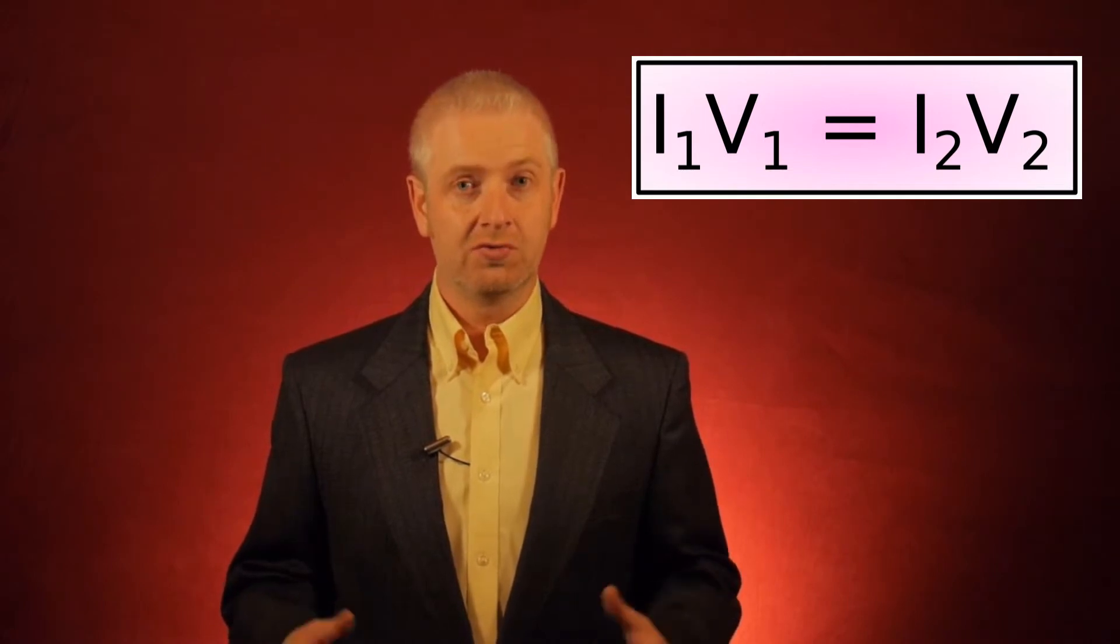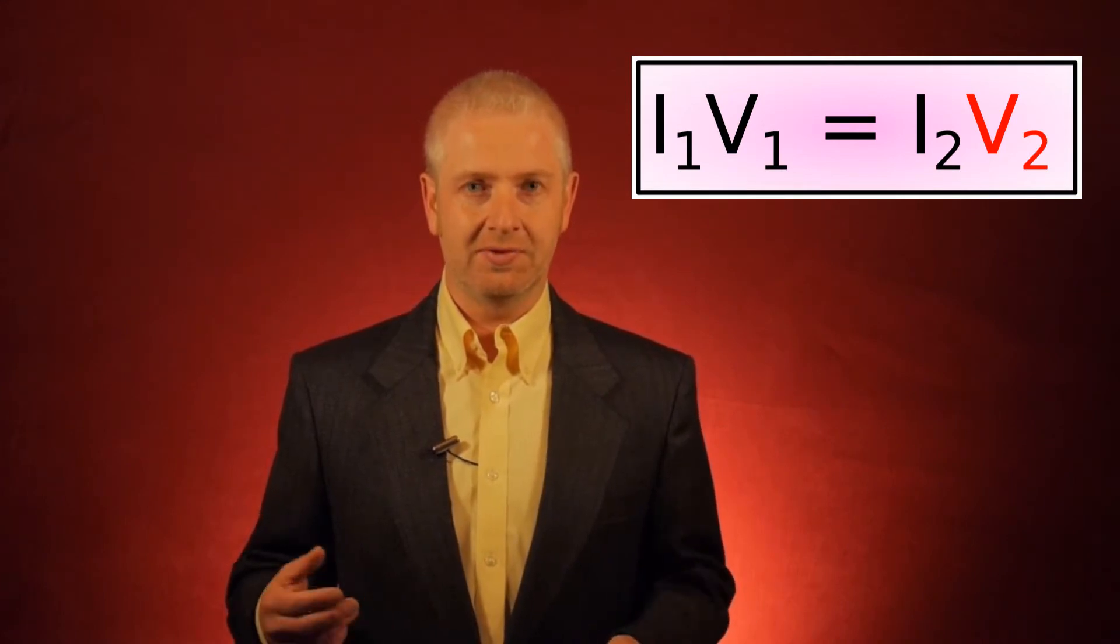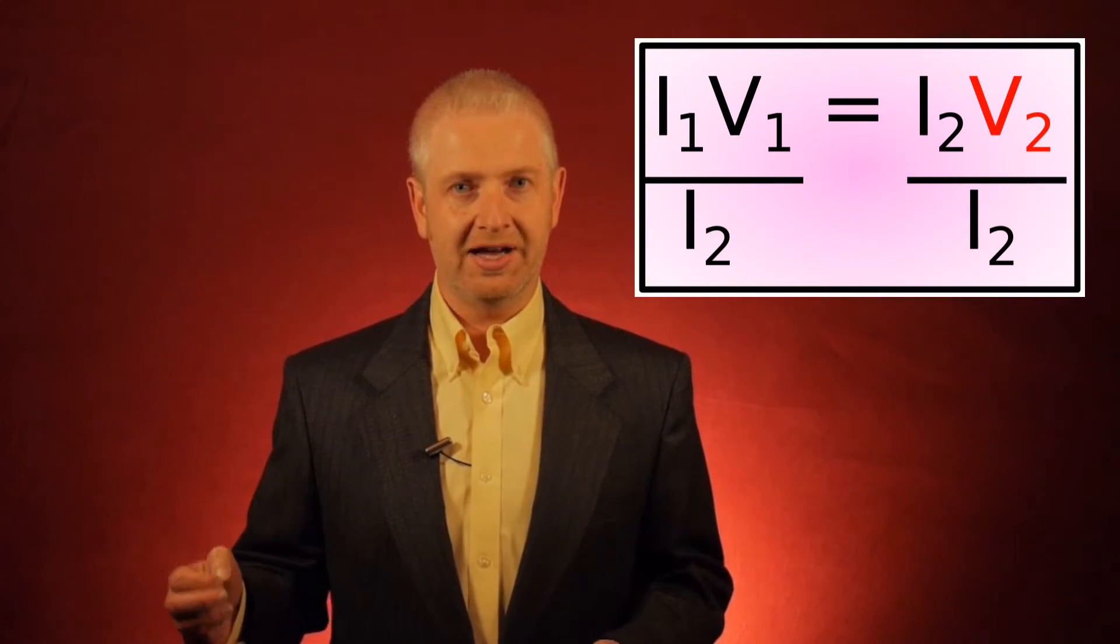Now, traditionally, suppose I wanted V2. What I would do is I would take I1 times V1 equals I2 times V2 and I would divide both sides by I2.